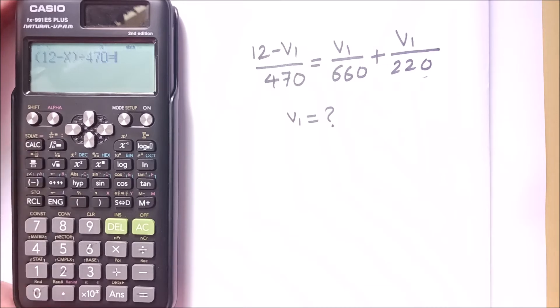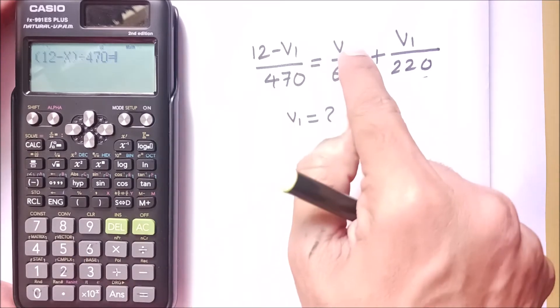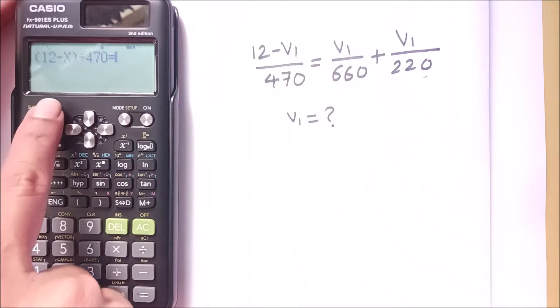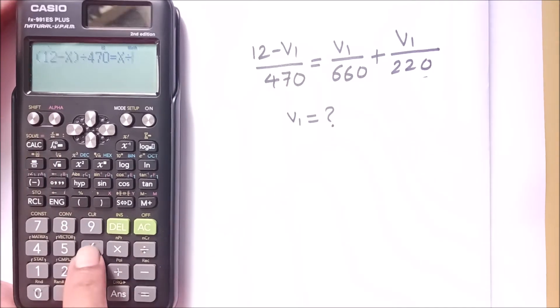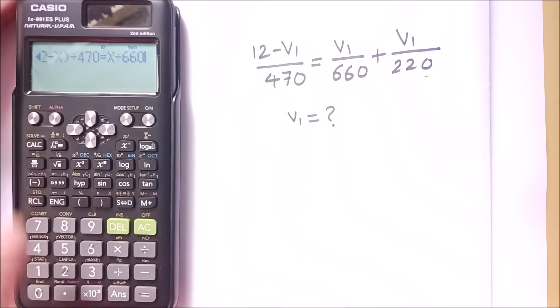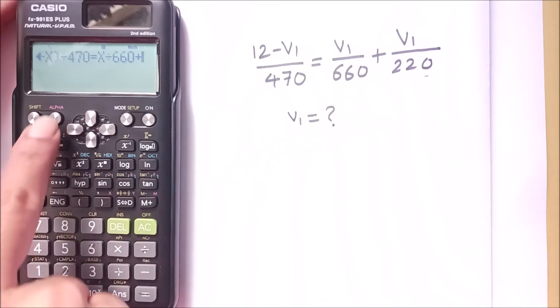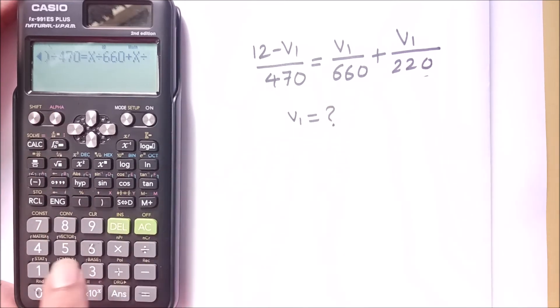Then I press plus V1 upon 220. In our case, it is alpha X divided by 220.